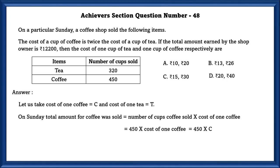On Sunday, total amount for coffee sold was equal to number of cups sold into cost of 1 coffee, that is 450 into C.